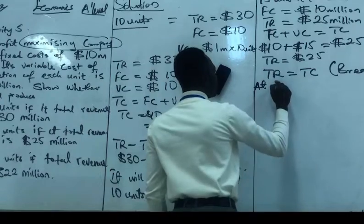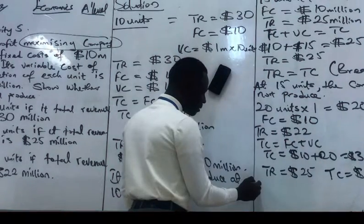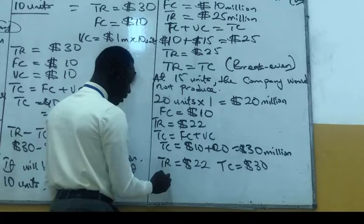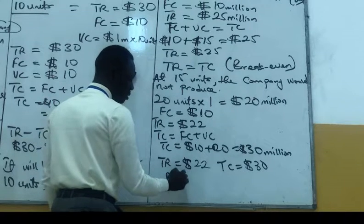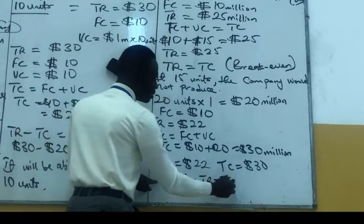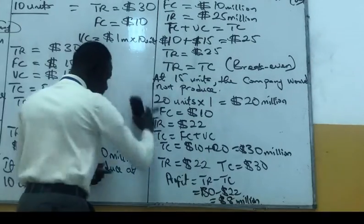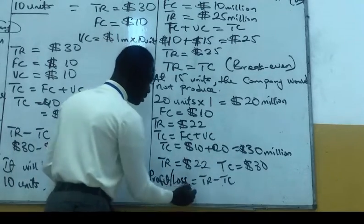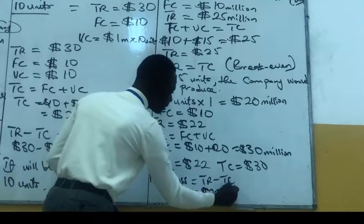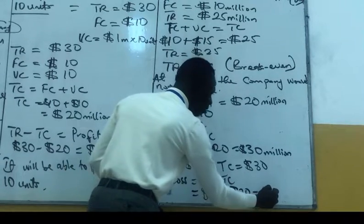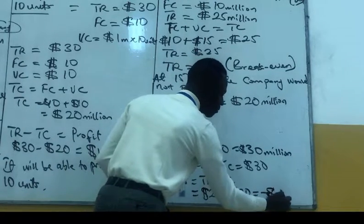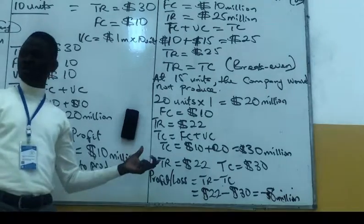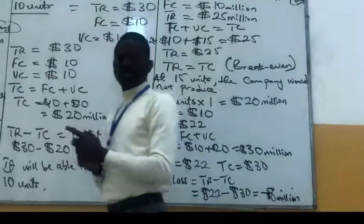So profit equals TR minus TC. Or loss equals TR minus TC. TR minus TC. 22 minus TC. 30. So negative, a loss. So it is not going to produce. It is only at loss. So will the firm produce? At ten units. At ten units. Is it clear? Yes. We're done. Thank you.